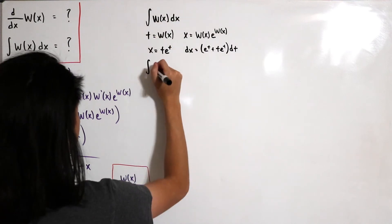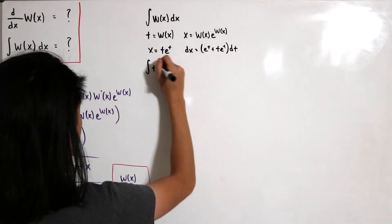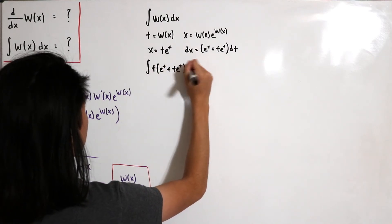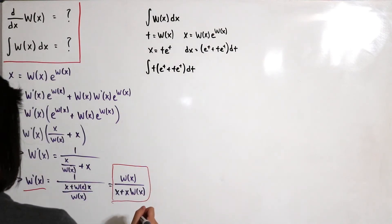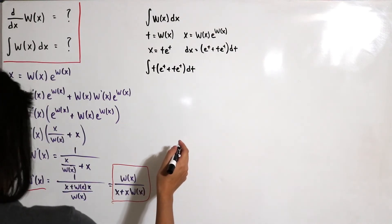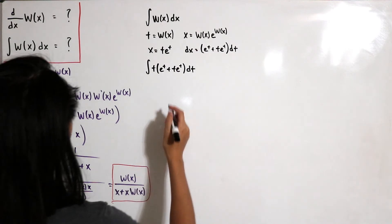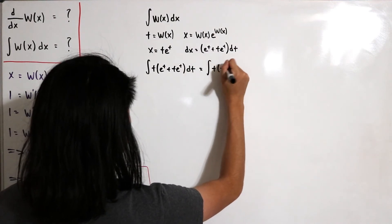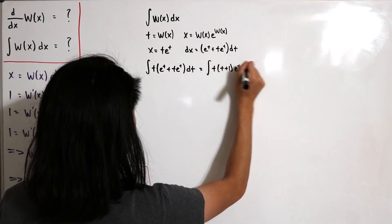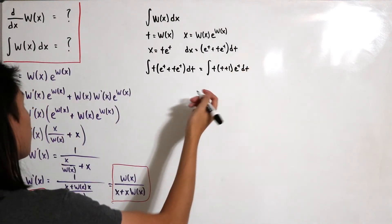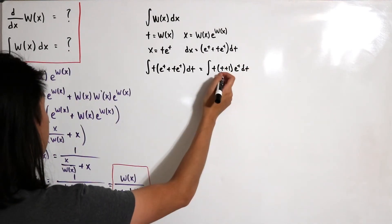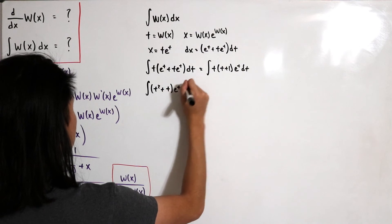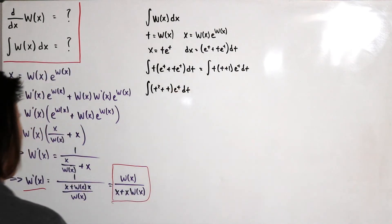Substituting into the integral, we replace W(x) with t and dx with (eᵗ + t·eᵗ) dt, giving the integral of t·(eᵗ + t·eᵗ) dt. Factoring out eᵗ: integral of t·(t + 1)·eᵗ dt. Distributing t gives the integral of (t² + t)·eᵗ dt.